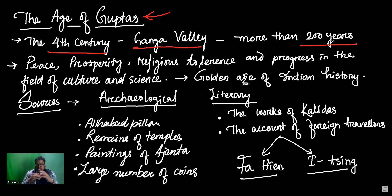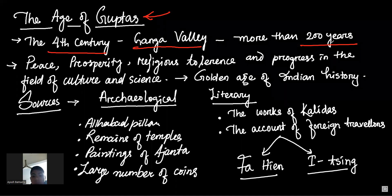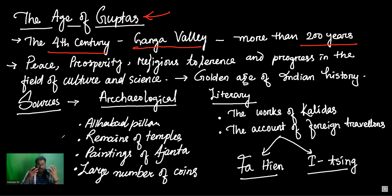And this was the period — for about a century afterwards — where we have a lot of peace, prosperity, religious tolerance, and progress in the culture and in the science. There was a lot of progress, which we will discuss in detail in this chapter. In a variety of fields there was prosperity. That's why we call it the golden age.